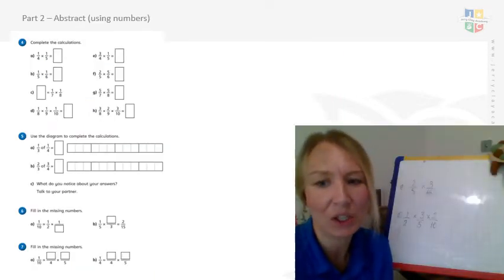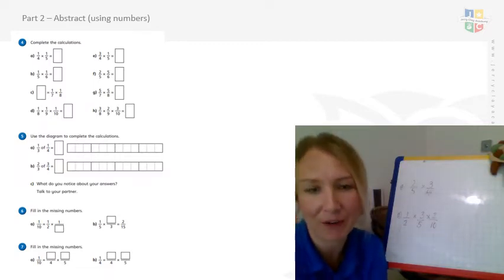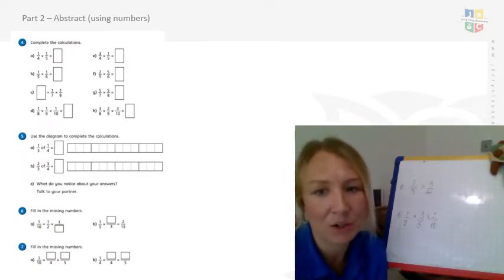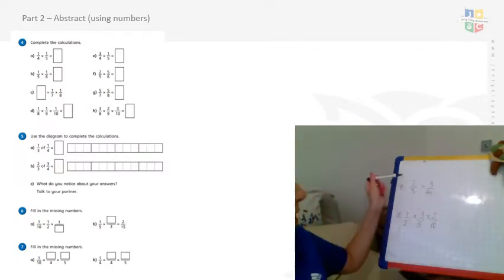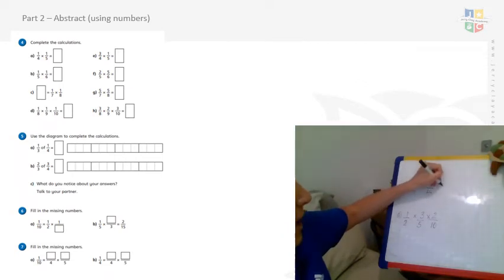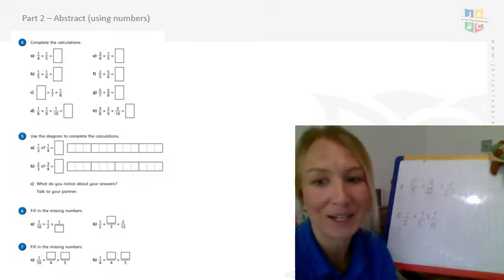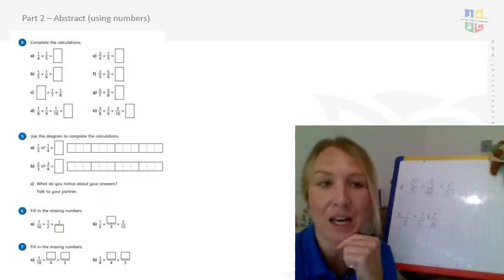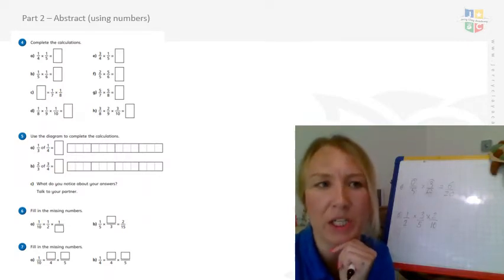Great work so far, Year 6. So what we're now going to do is have a look how you multiply fractions by fractions with just numbers. Now as we know, that is very straightforward and simple. All you need to do is multiply your numerator by your numerator and then your denominator by your denominator. So here on my first one, I've got two fifths multiplied by three quarters. So I'm going to multiply my numerators first, so two times three gives me six. And my denominator is five times four, gives me twenty. So my fraction there is six twentieths.